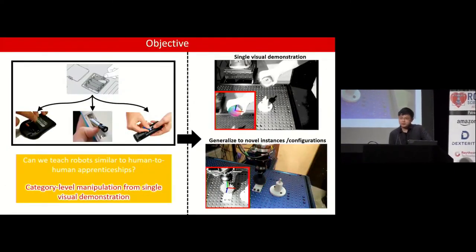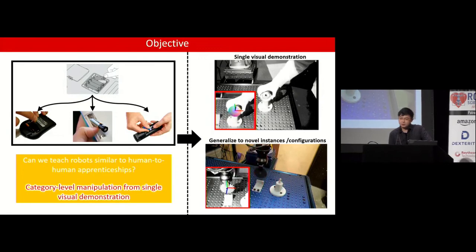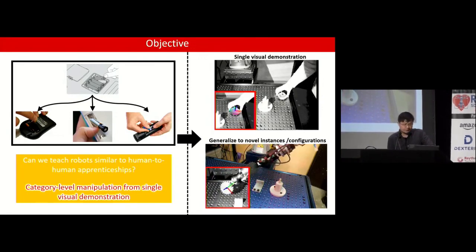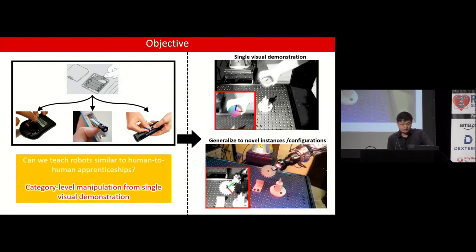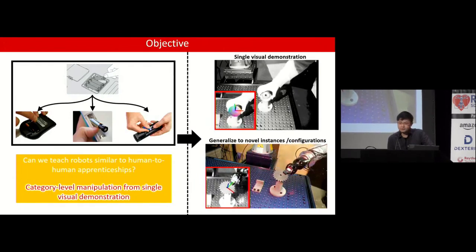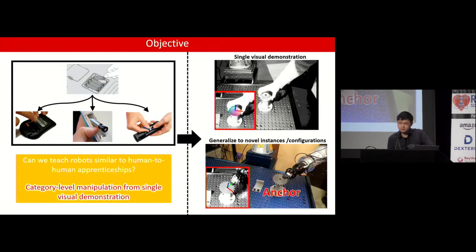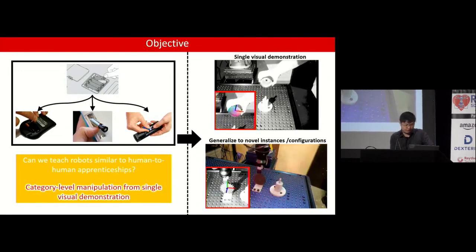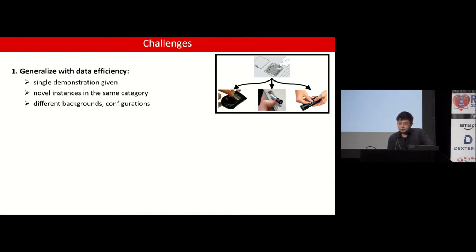As humans, we're able to watch a demonstration once and immediately generalize the task to various instances. We are interested in answering this question: can we teach the robot similar to human-to-human apprenticeship? That is, category level manipulation from single visual demonstration. To do so, there are multiple challenges. First, we need to generalize with high data efficiency.